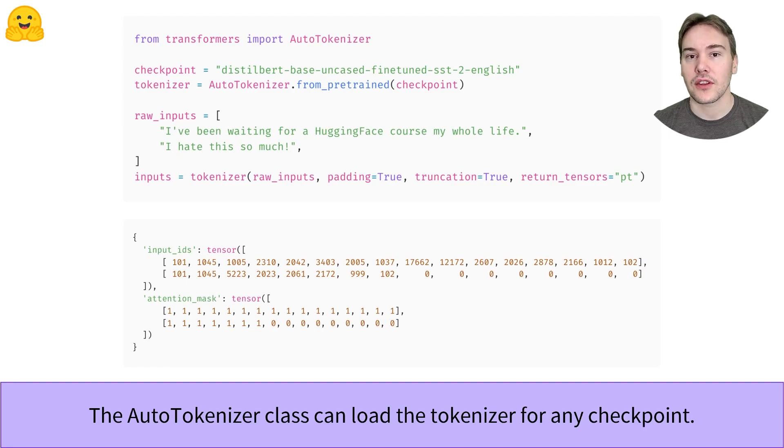Since these two sentences are not of the same size, we'll need to pad the shortest one to be able to build an array. This is done by the tokenizer with the option padding equals true. With truncation equals true, we ensure that any sentence longer than the maximum the model can handle is truncated. Lastly, the return_tensors option tells the tokenizer to return a PyTorch tensor.